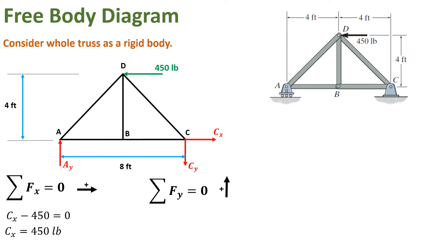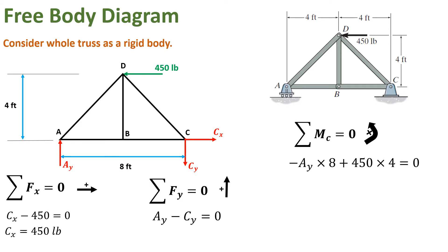Now we are applying the condition in the Y direction: the sum of all forces in the Y direction is zero, taking upward as positive. Two forces are acting in the Y direction, which are AY and CY. AY is acting upward so it is positive and CY is acting downward so it is negative. Now we apply the moment condition: the sum of all moments at point C is equal to zero, taking anticlockwise as positive. Only two forces create a moment about point C, which are AY and 450 pounds.